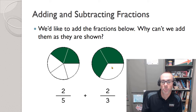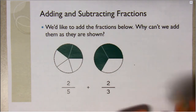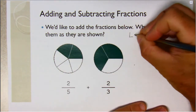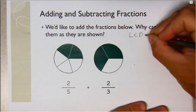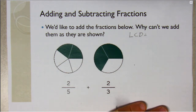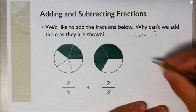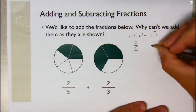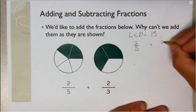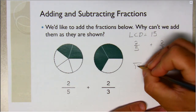We would be more easily able to tell how those pieces can be combined if we had the same denominator. So when we add fractions we always like to do that using a common denominator. We want to add two-fifths and two-thirds, so the first thing we need to do is find the common denominator.